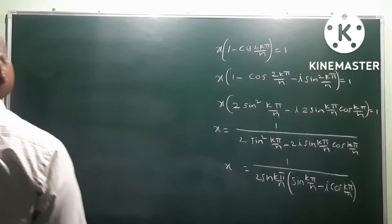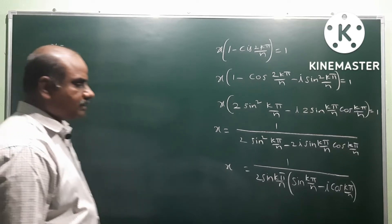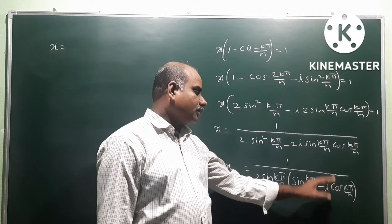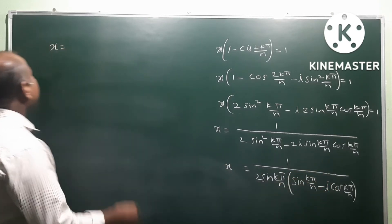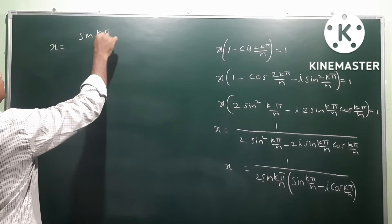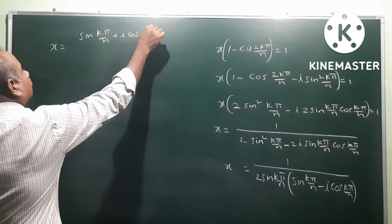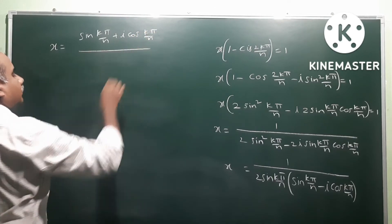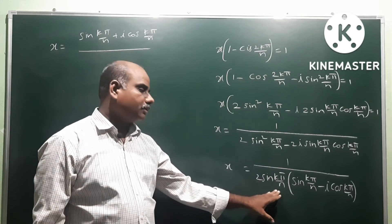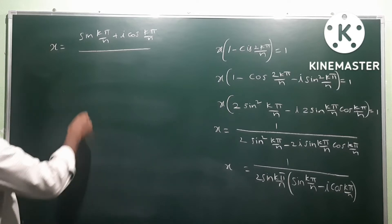So x equals (sin(kπ/n) - i·cos(kπ/n)) in the numerator divided by 2sin(kπ/n) in the denominator. Using the formula sin(kπ/n) plus i·cos(kπ/n), the denominator is 2sin(kπ/n).